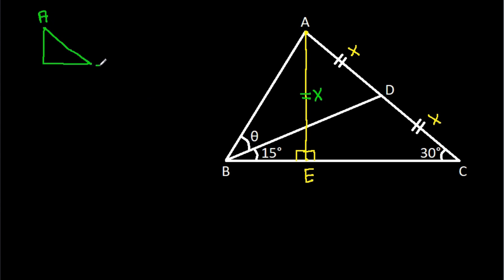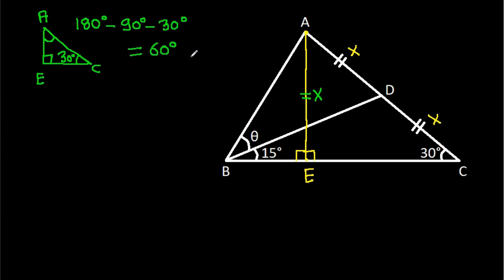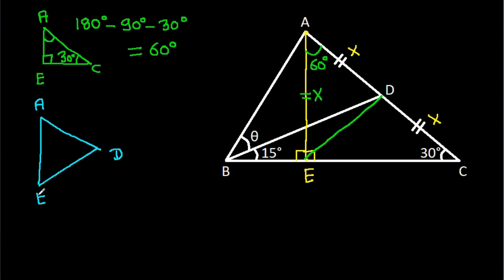In triangle ACE, the angles are 90 degrees, 30 degrees, and therefore 60 degrees. Now if we join DE, in triangle ADE we have AD equal to AE equal to X and the included angle is 60 degrees, which means triangle ADE is equilateral.